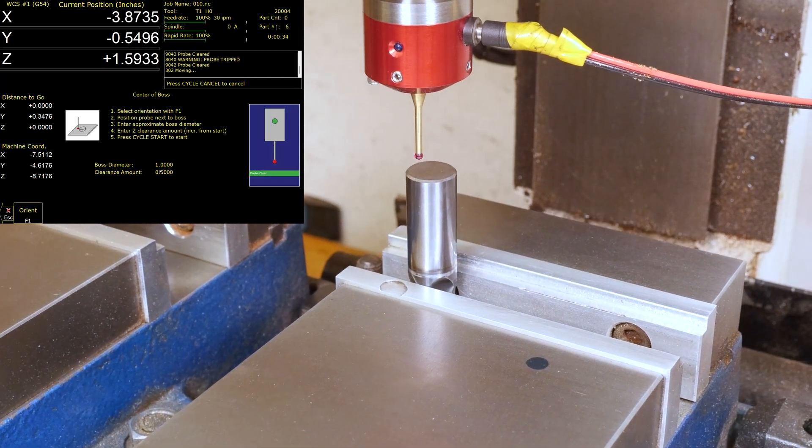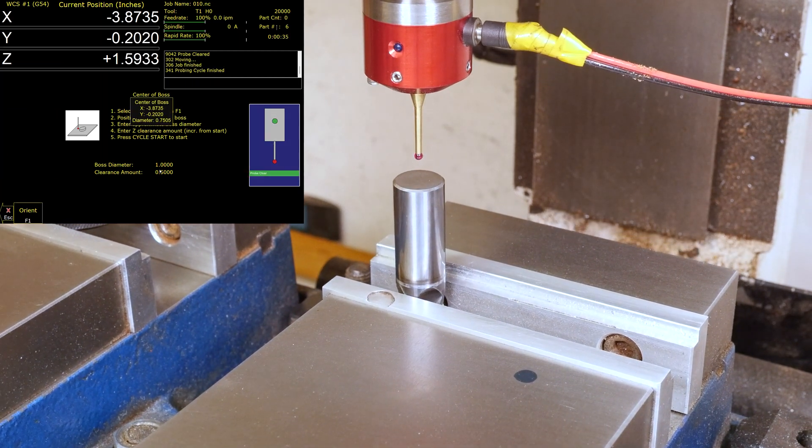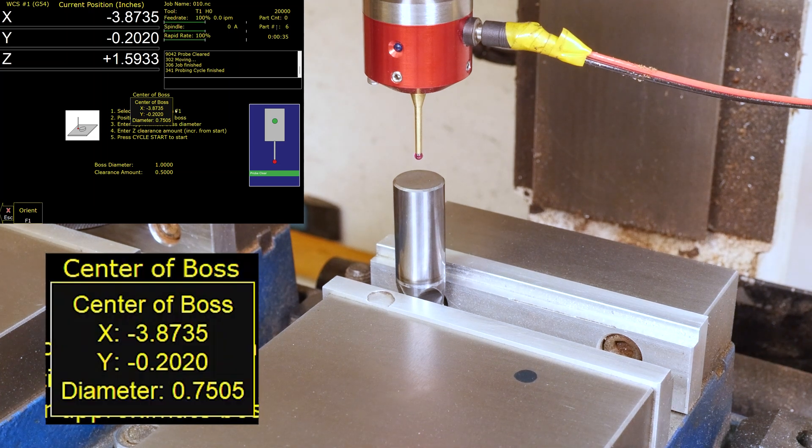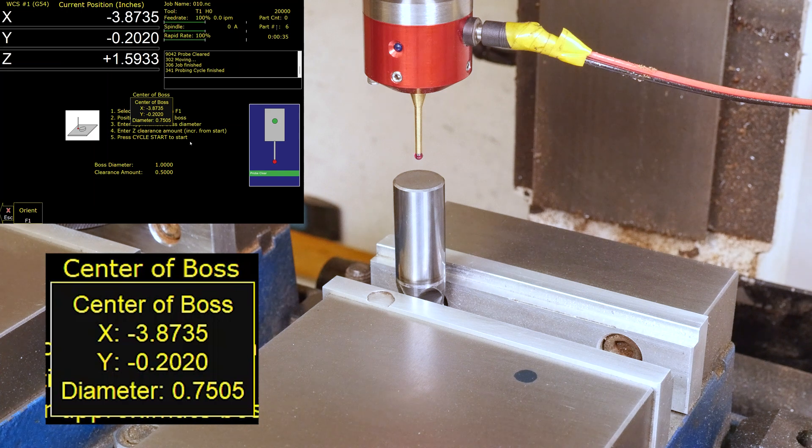And just like the bore when this finishes up here it parks itself right in the middle of the boss but more importantly it tells us the diameter. It is .7505 so we know it's three quarters of an inch which is 750 we're getting 750 and five tenths. Again five tenths is well within the one thousandth of an inch accuracy and resolution that my machine is capable of so that's pretty good.